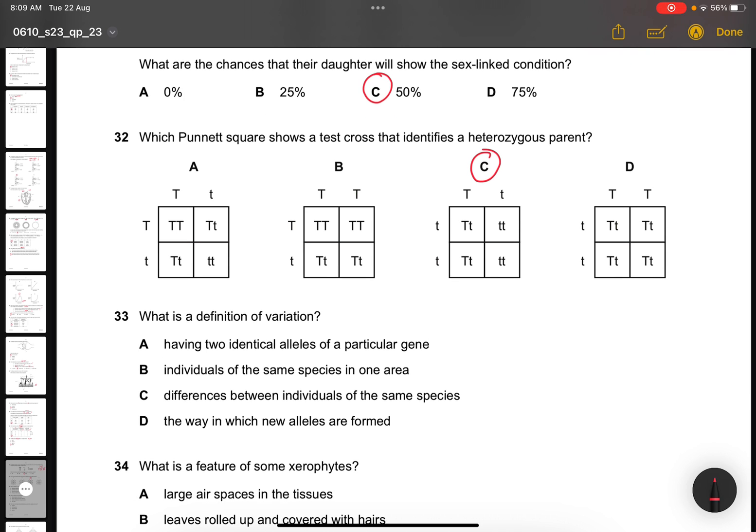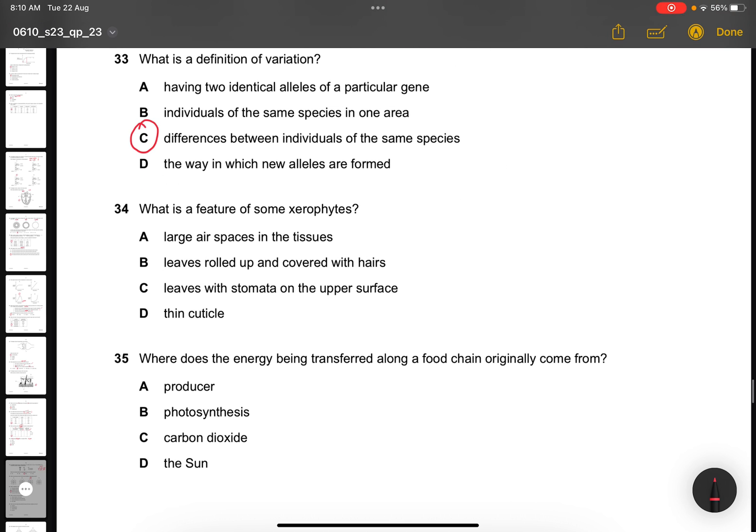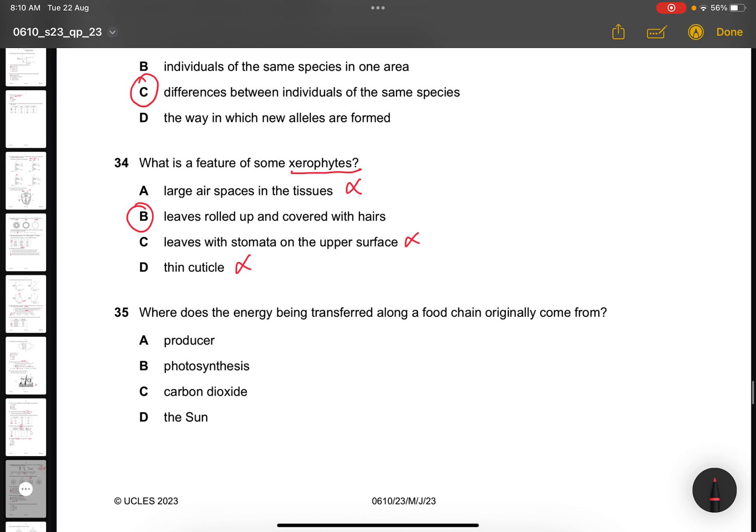Question 33. What is the definition of variation? You must be familiar with this. It's the differences between the individuals of the same species. Question 34. What is the feature of some xerophytes? They are the desert plants. Large air spaces in the tissue? Nope. Leaves rolled out if they're covered with hairs? Yeah, this is correct actually. Leaves stomata on the upper surface? Nope. Thin cuticle? Nope, because they cannot lose water. Question 35. Where does the energy being transferred along a food chain originally come from? This is initial. A food chain has the sun being the primary source of energy.